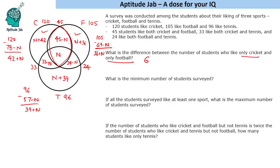The second question asks: what is the minimum number of students surveyed? We add all the region values: the total comes out to 219 plus n. To find the minimum, we put n equal to 0, which gives us 219 students surveyed as the minimum.